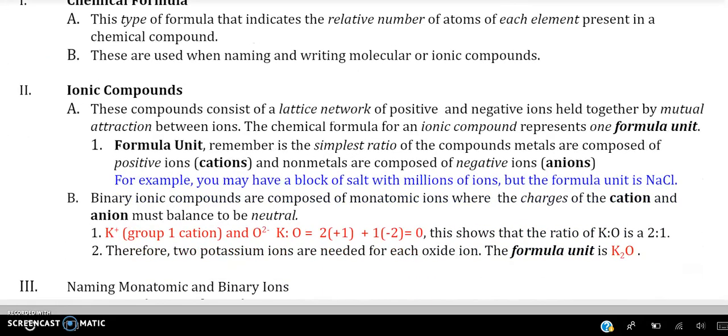Today we'll focus on ionic compounds. Ionic compounds are a lattice network of positive and negative ions held together by mutual attraction between ions. These ions form a formula unit, the simplest ratio of compounds of metals, which are made of cations which are positive, and non-metals who are composed of negative ions that are anions. For example, when you see a block of salt with millions of ions, you're going to see the formula unit of just sodium chloride.